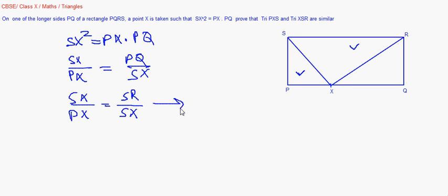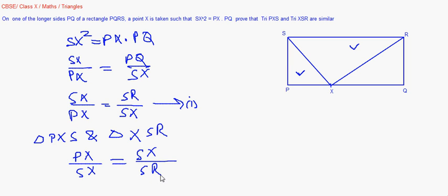Let us keep this as our first information which we have derived. Now we take the triangles PXS and triangle XSR. We can write PX by SX from the first equation, I just reciprocated it.